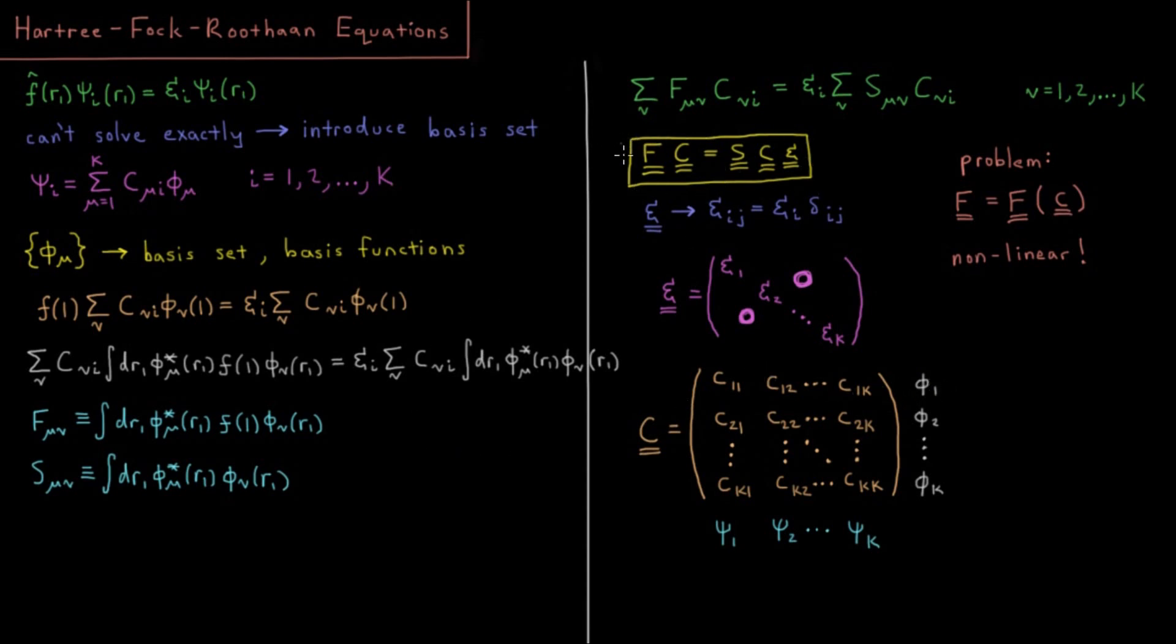The Hartree-Fock-Roothaan equations basically say there's a bunch of integrals here. Calculate those integrals, and then once you have those integrals, solve this type of matrix equation and you can get the coefficients. Those coefficients indicate what all of your Hartree-Fock orbitals are, and this epsilon matrix represents what all of your orbital energies are. So all we have to do is solve this set of equations, do a bunch of integrals, get the matrix elements, and then go to town.